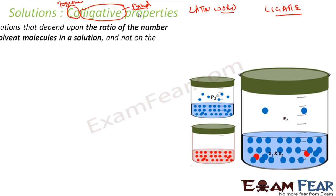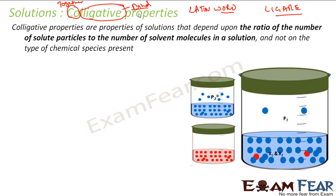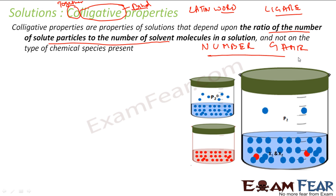I'll show you the definition and you'll understand what the word colligative means. Colligative property is the property that depends only on the ratio of number of solute particles to solvent particles. It's just a number game — it doesn't depend on the type of chemical species.